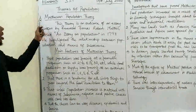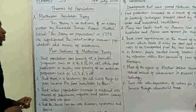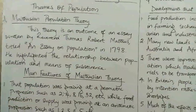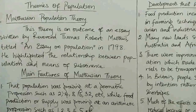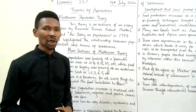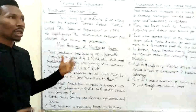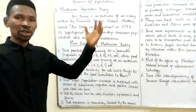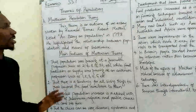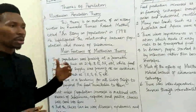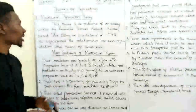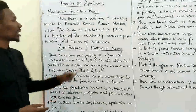The first one on the board is Malthusian population theory. As you can see on the board, this theory is an outcome of an essay that was written by Reverend Thomas Robert Malthus. He was a clergyman who was also a political economist journalist of that time, in the 18th century in Europe, specifically Britain or England. He wrote an essay which has become the basis for his postulations, gathered from the essay he wrote on population in 1798.